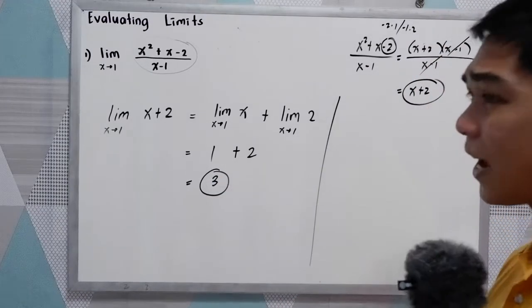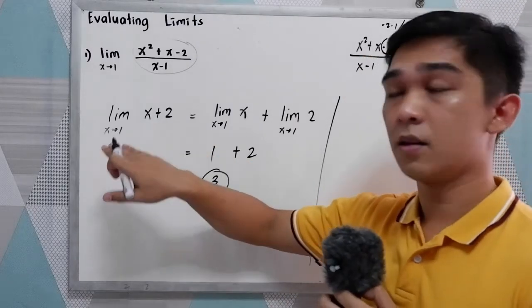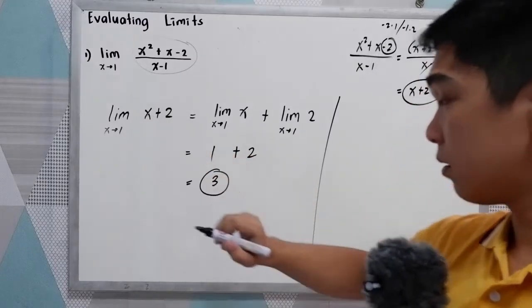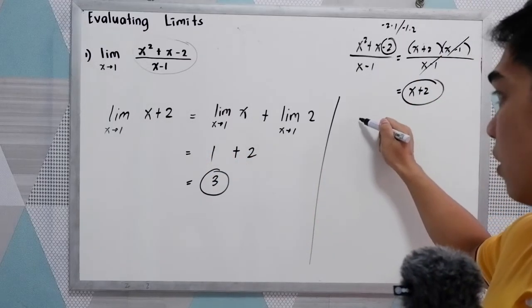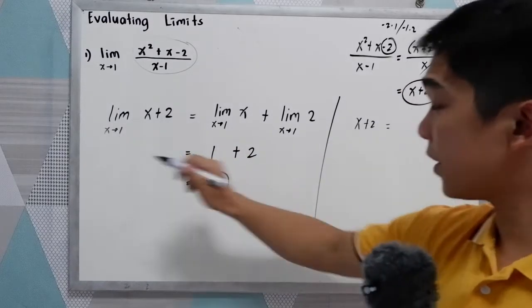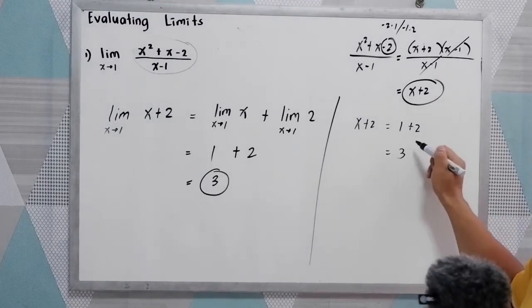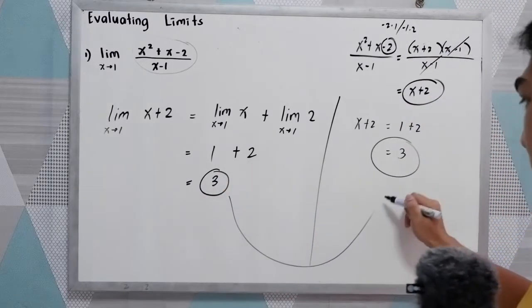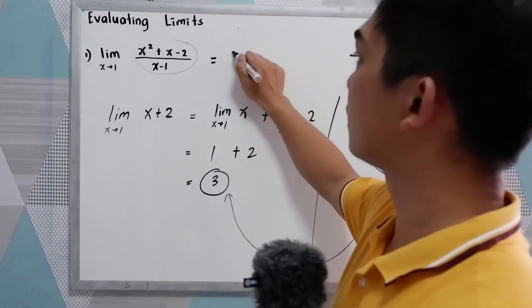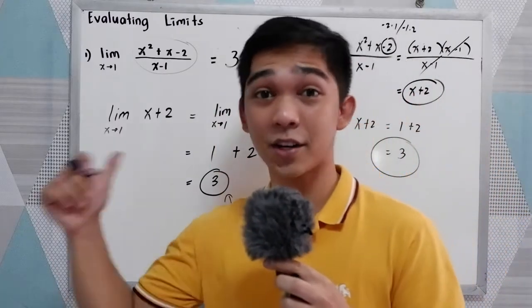Now let us also apply the limit of a polynomial function, since x plus 2 is a polynomial. We simply substitute our value a equals 1: we get 1 plus 2, which equals 3. So they are the same — the value of this limit is equal to 3. That is our first example. Let's have another one.